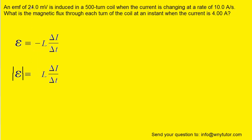Now the question gives us the induced EMF of 24 millivolts. We'll have to multiply that by 10 to the minus 3 to convert it into volts. And then the quantity delta I over delta T is given to us as 10 amps per second. So we can plug that in and solve for the inductance L.